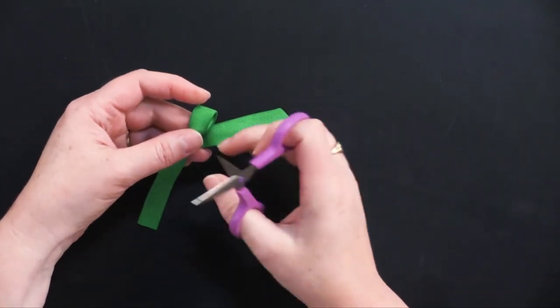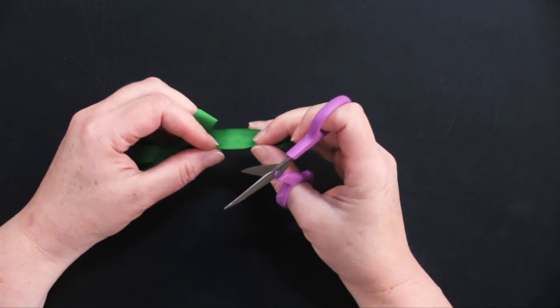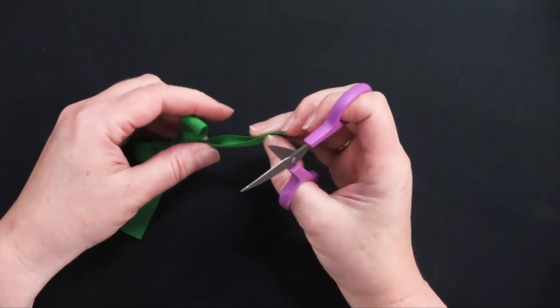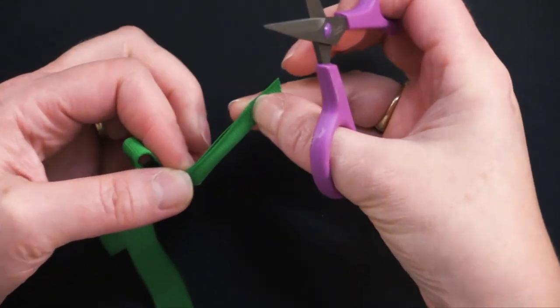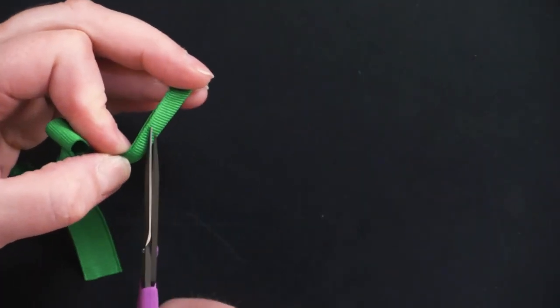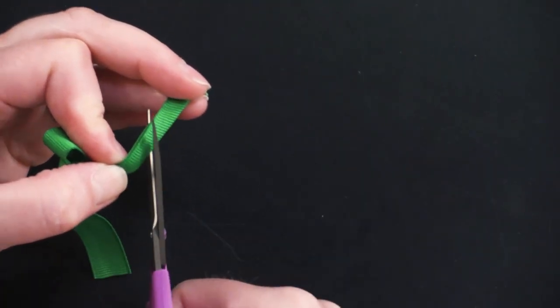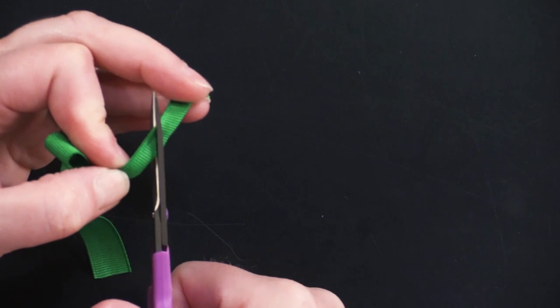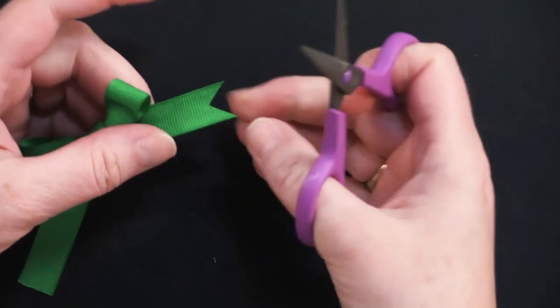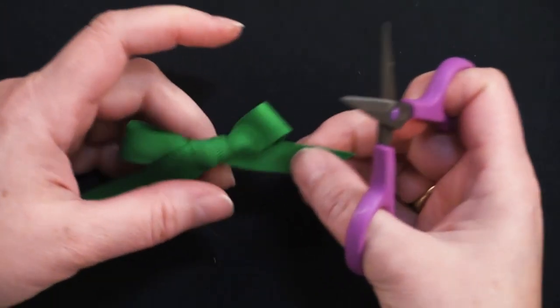Or you can give it a notched tail and you do that by folding the ribbon in half. I'm just going to hold it between my fingers like this and then you're going to cut away from the center of the bow. Just like that and it gives you that nice notched tail.